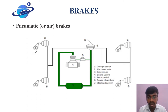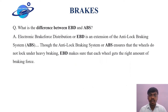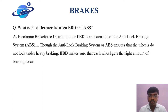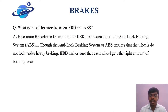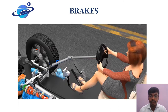Next we look at the difference between Electronic Brake Force Distribution (EBD) and Anti-lock Braking System (ABS). EBD is an extension of ABS. The anti-lock braking system ensures that the wheels do not lock under heavy braking. EBD makes sure that each wheel gets the right amount of brake force. You can have a clear understanding about ABS and EBD by watching the video in the next slide.